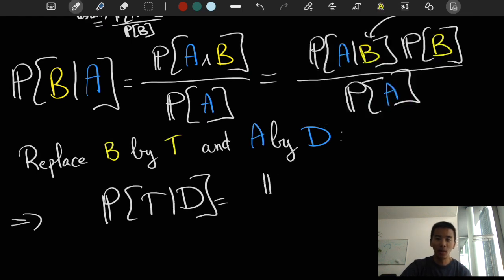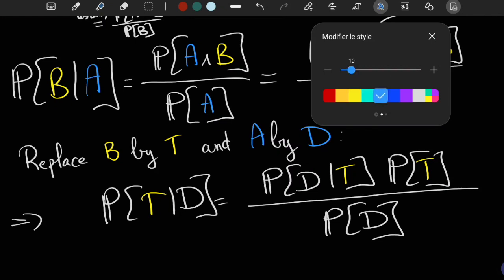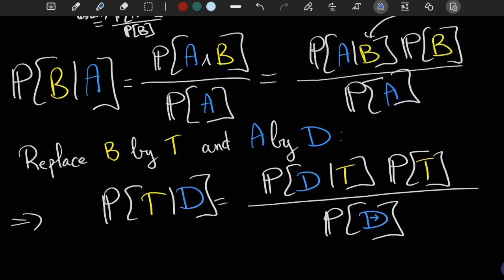Well, that's easy. It yields probability of T given D is equal to the probability of D given T times the probability of T divided by the probability of D. But this is not all.